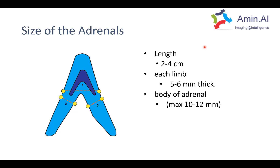Regarding the size of the adrenal gland, the length can vary up to 4 cm. Each limb is normally around 5 to 6 mm thick, and the body — where the limbs join — should not measure more than 10 to 12 mm at maximum.